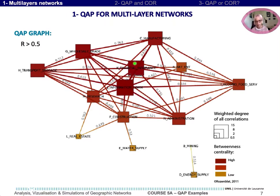By contrast, mining and energy supply are organized with very different shapes between cities. So this was the first example of the use of QAP correlation.